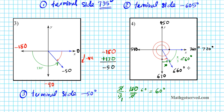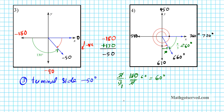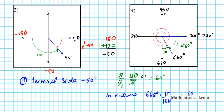So 660 degrees is our terminal side in degrees. To express it in radian form, we multiply 660 degrees by pi over 180 degrees. The degrees cancel. We multiply across to get 66 pi over 18, then divide numerator and denominator by 6, ending up with 11 pi over 3. So the terminal side is 11π/3.